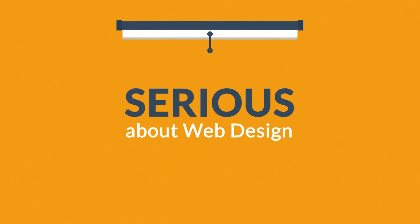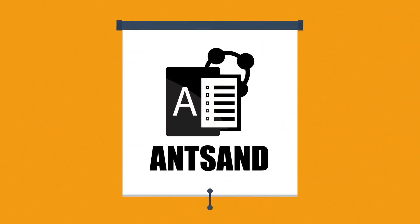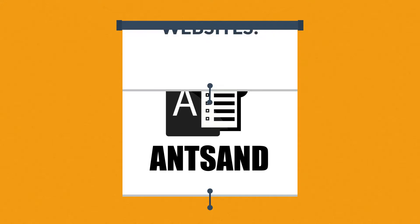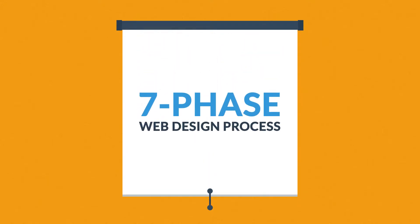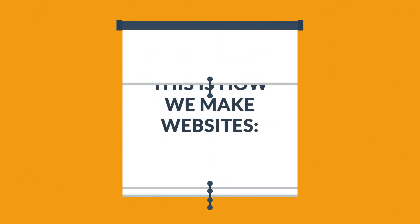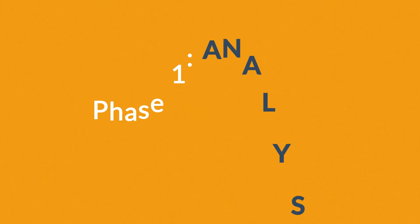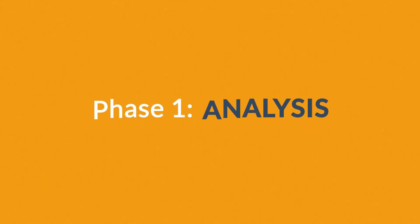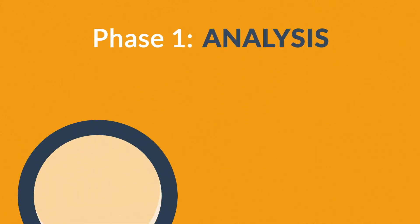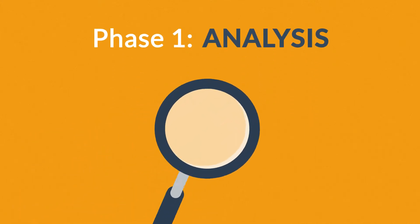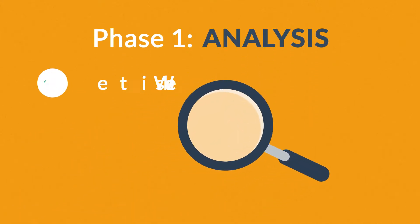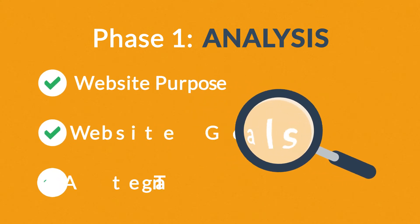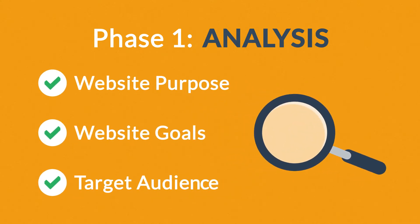Well, that's where we come in. This is how we make websites, by following this seven-phase web design process. Phase 1: Analysis. The first step is always about information gathering, identifying things like the website purpose, goals, and target audience.